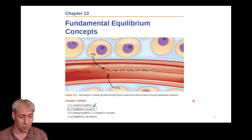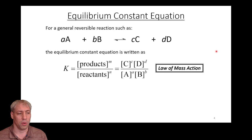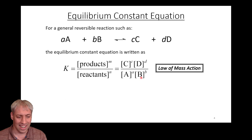In the previous video, we talked about the equilibrium constant equation — the general formalism. If we have an equilibrium A plus B giving us C plus D, the equilibrium constant is proportional to products over reactants: C to the c, D to the d, A to the a, B to the b. It's a ratio of products to reactants, also known as the law of mass action.